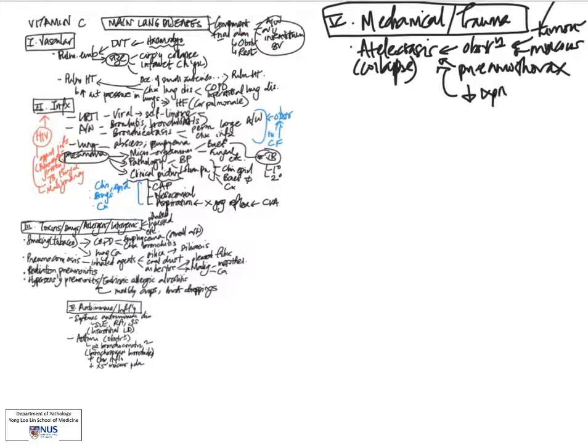There can also be certain instances where the alveoli are not able to expand, for example, if there is decrease of surfactant production or surfactant deficiency, and this can sometimes be seen in neonates, and also if there is scarring of the lung parenchyma.